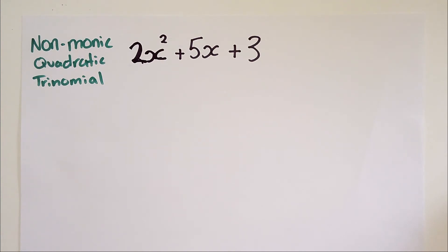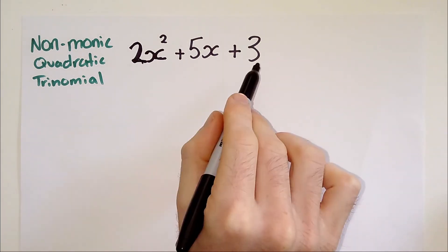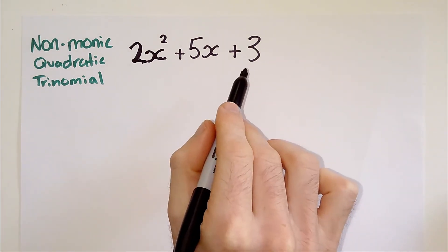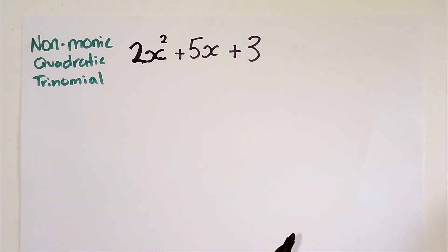A couple of preliminary points here. This method of factorization will not work for every type of non-monic quadratic trinomial. It will only work where the factors of this particular expression are rational.